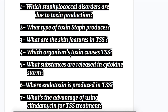Question one: Which Staphylococcal disorders are due to toxin production? Question two: What type of toxins does Staph produce? Question three: What are the skin features in toxic shock syndrome? Question four: Which organism's toxin causes toxic shock syndrome? Question five: What substances are released in a cytokine storm? Question six: Where is endotoxin produced in toxic shock syndrome? Question seven: What is the advantage of using clindamycin for toxic shock syndrome?